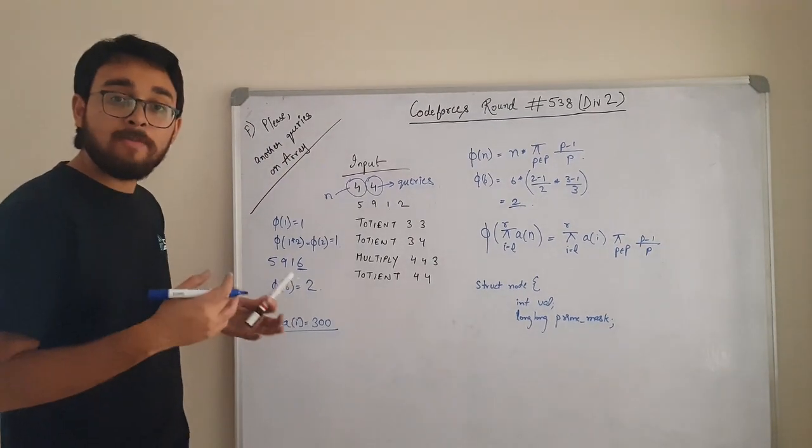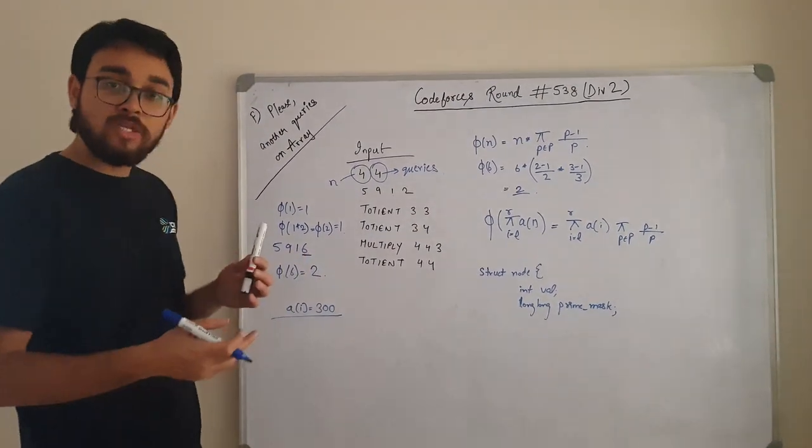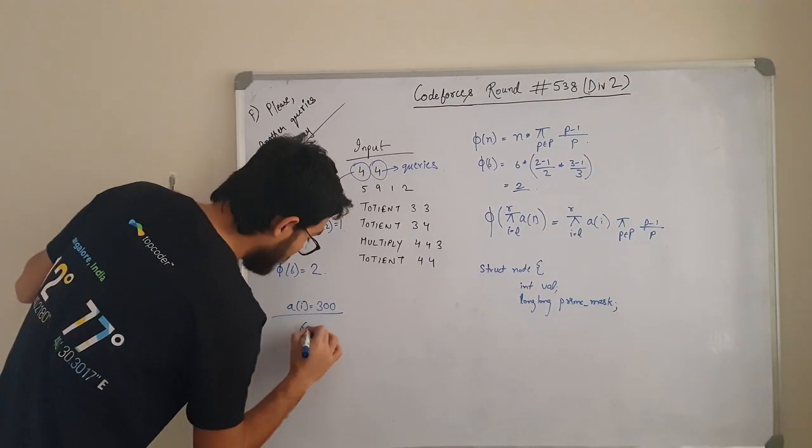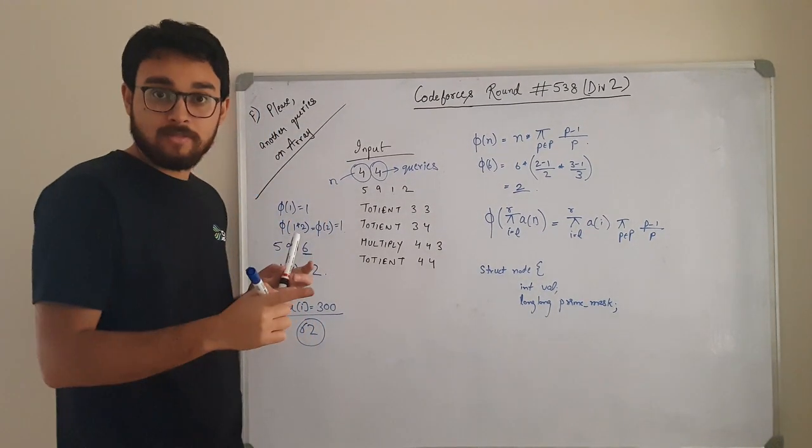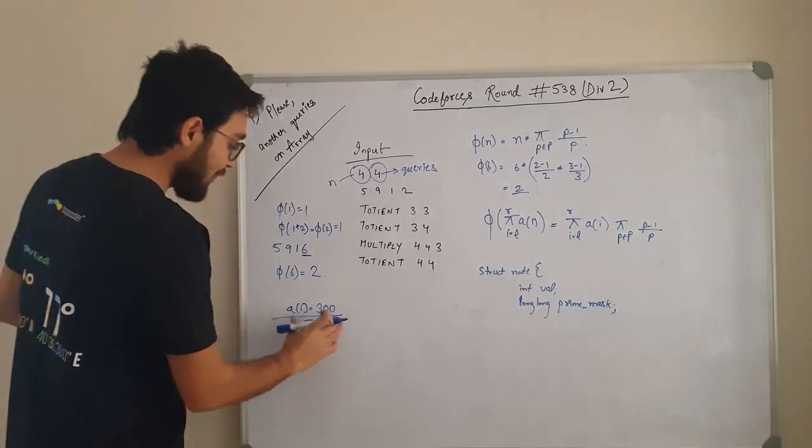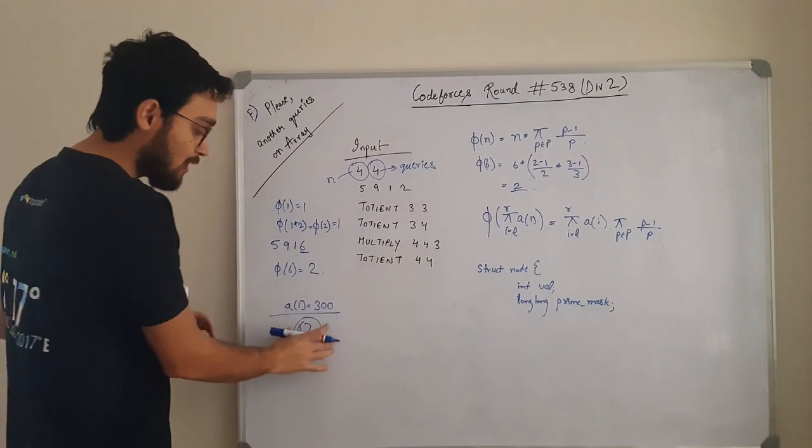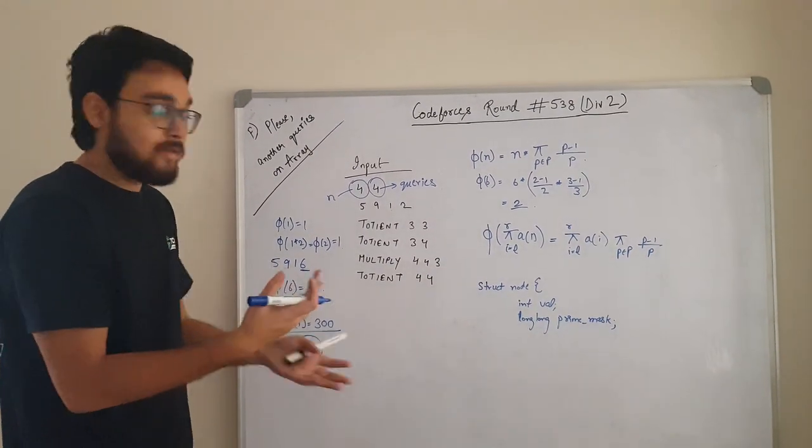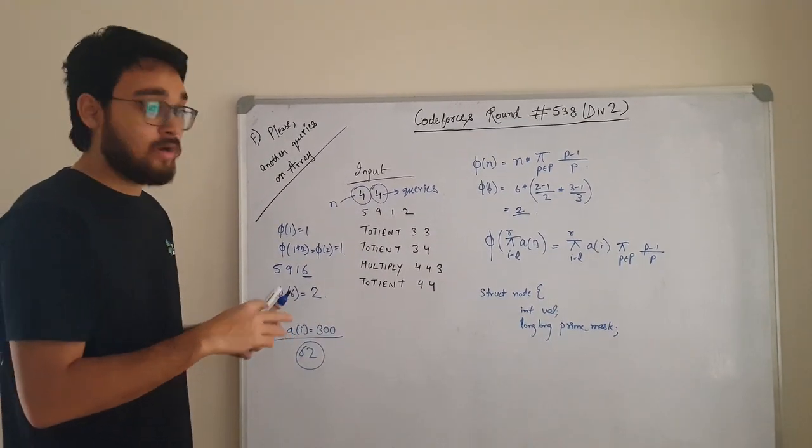Because a[i] was given to be maximum 300. The number of primes less than or equal to 300 are 62. So I have 62 primes. And as long long takes 64 bit, I can bit mask that and store it in that long long prime_mask value.